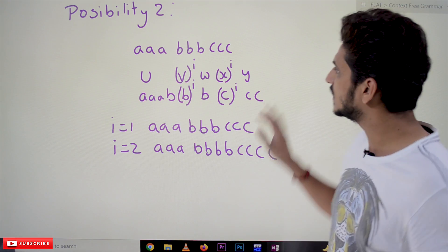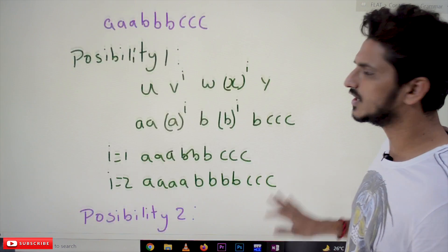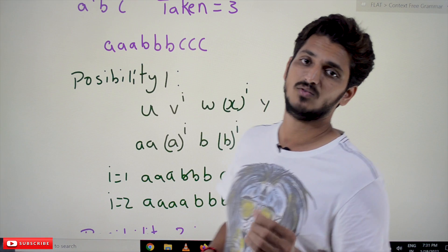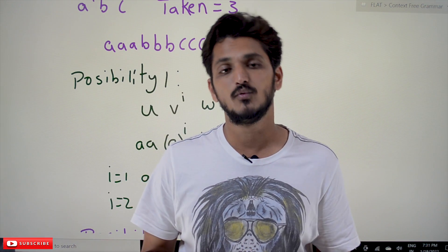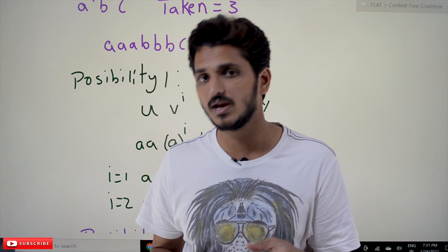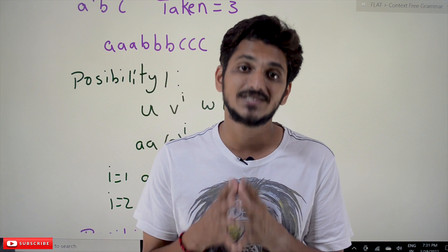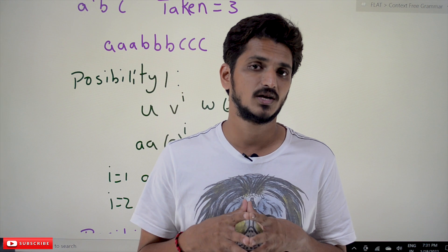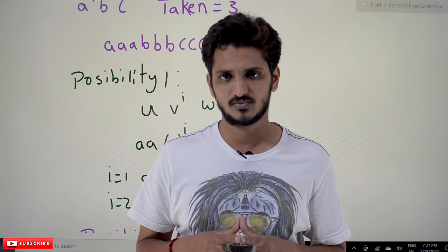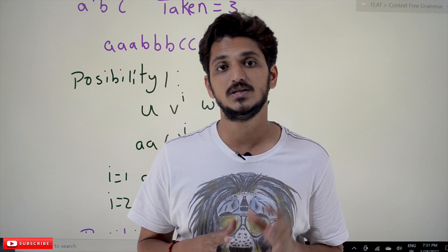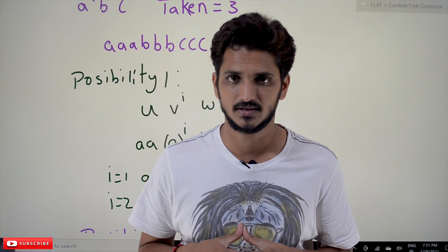If you show that all the possibilities are not going to generate the required strings, we can say that the given language is not a context free language. This is how we use pumping lemma to show that a language is not context free. Hope you understand the concept. If you have any questions, please post them in the comment section below. Thanks for watching — please subscribe to our channel and press the bell icon for the latest updates.